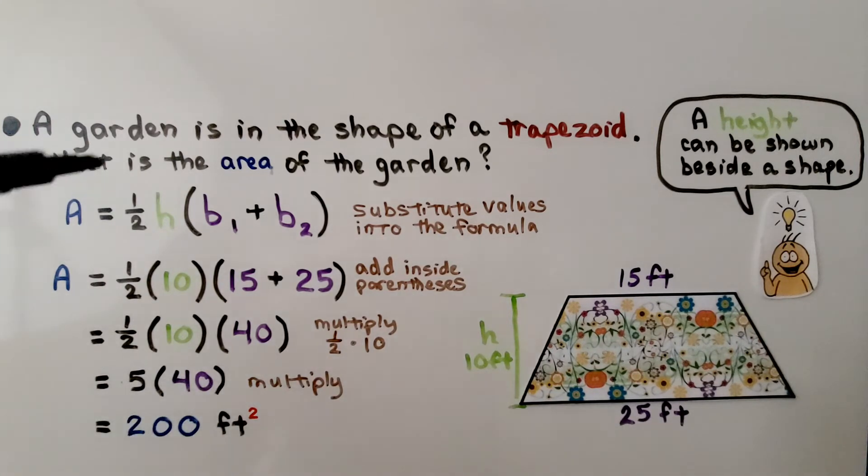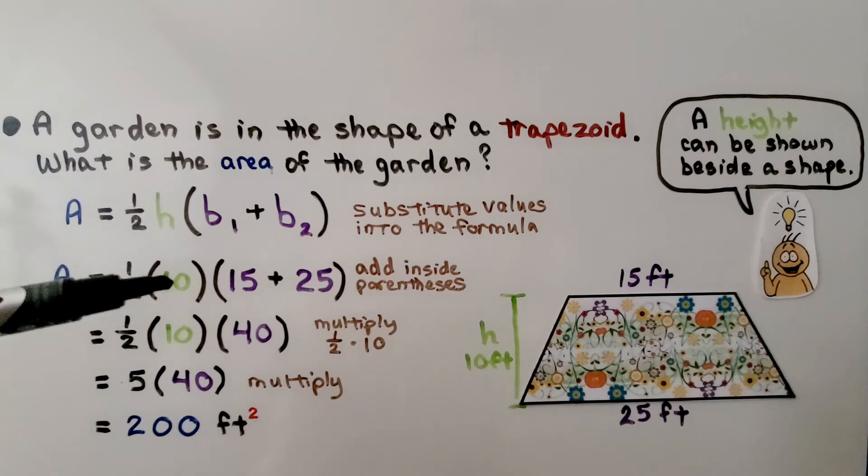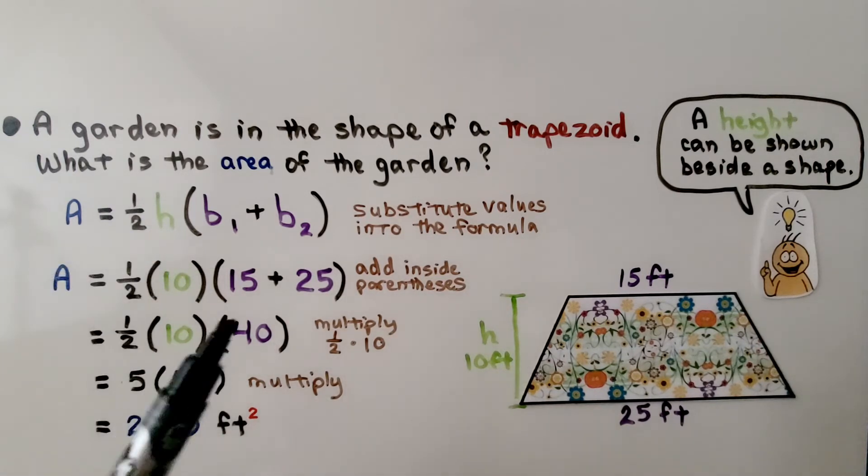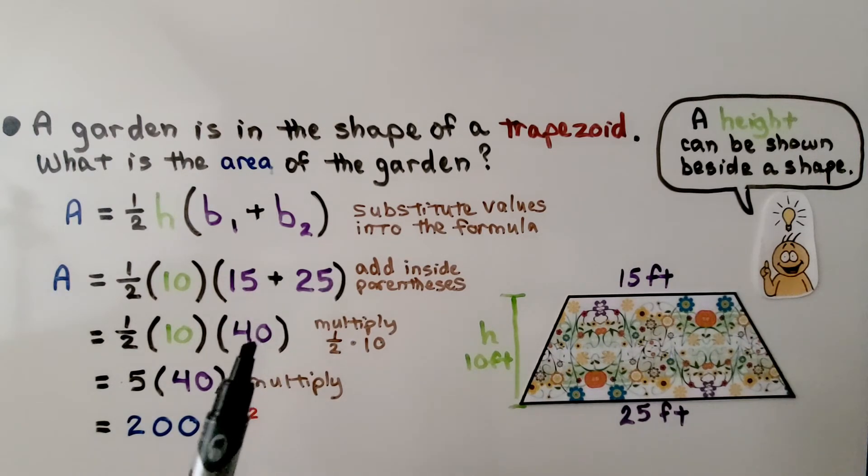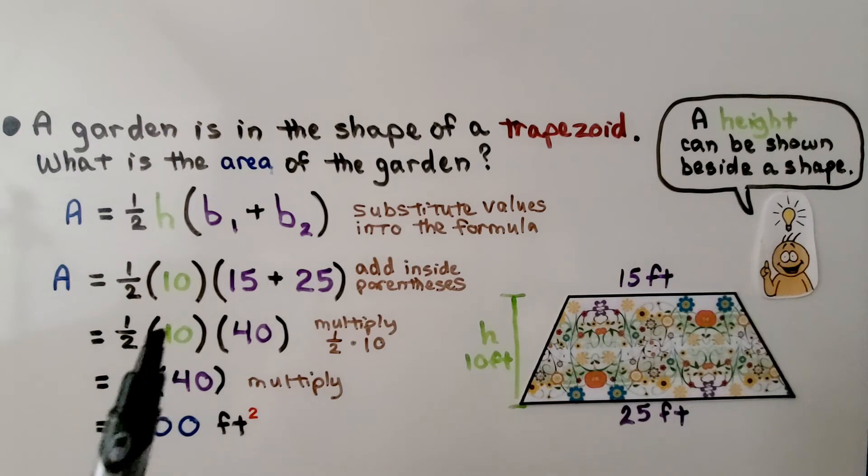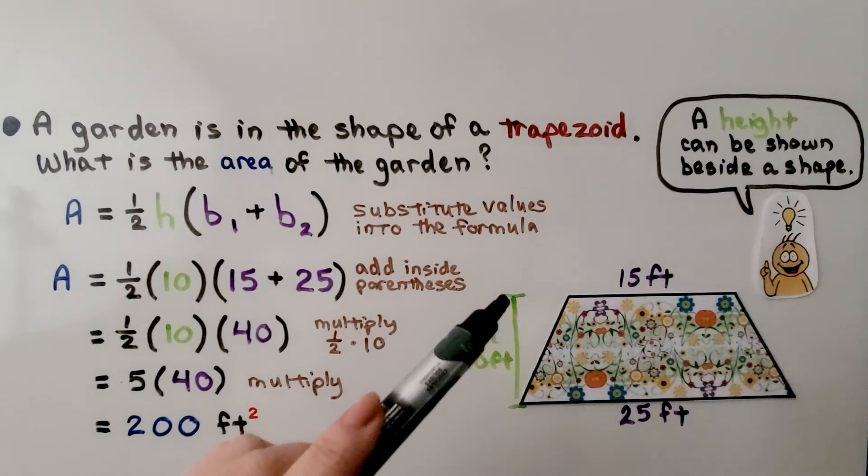We substitute the values into the formula. So now we have half multiplied by 10 multiplied by the sum of 15 and 25. We add inside the parentheses, we get a 40. We can multiply half times 10, which will give us a 5. We multiply that to the 40, and we get 200 feet squared. So notice that the height is on the outside.